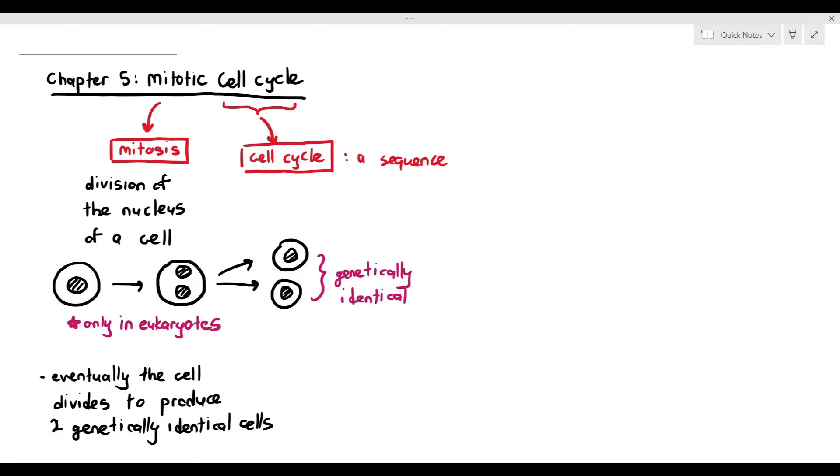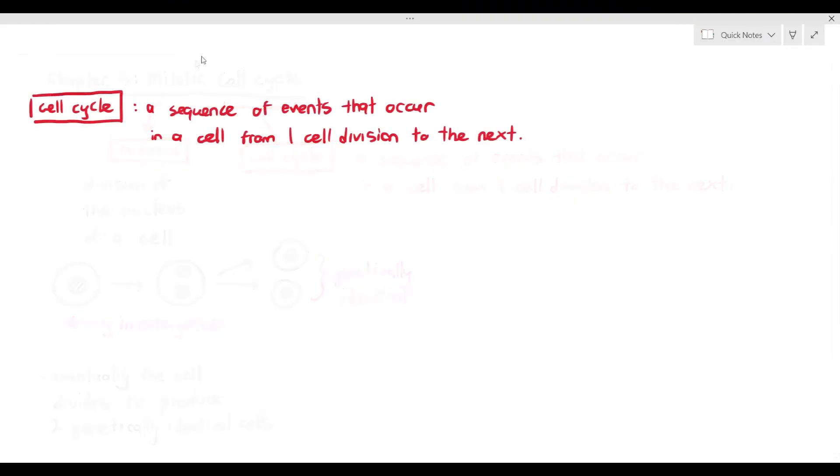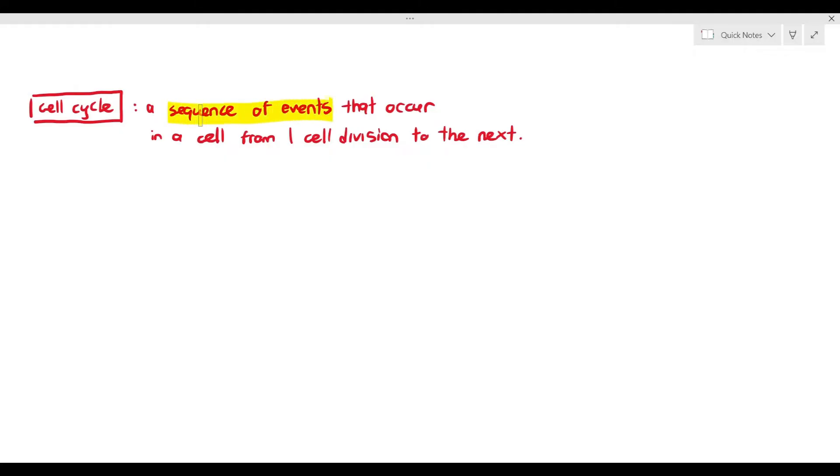And when we look at the cell cycle, the cell cycle is just, very simply put, a sequence of events that occur in a cell from one cell division to the next. Quite a mouthful when you think about it. Do you have to memorize the meaning of cell cycle? I don't think you have to memorize it for the exam. It's good to know, but we want to understand that when a cell undergoes mitosis, it first needs to undergo a series of events, or a sequence of events. So what are these events? Let's look at it.